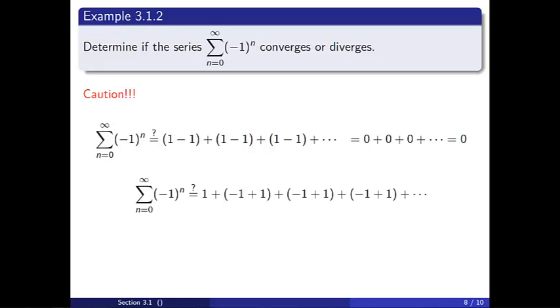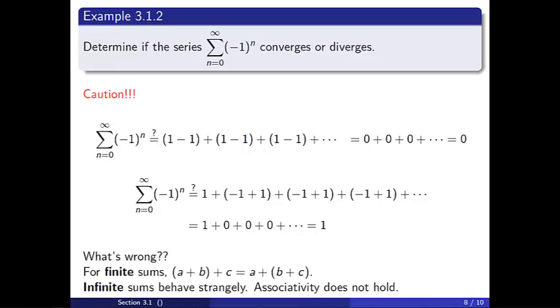Or, if we had grouped them differently, we could have mistakenly thought the answer was 1. The problem is that while associativity holds for finite sums, infinite sums behave strangely. Associativity does not hold. This is why we must use partial sums.